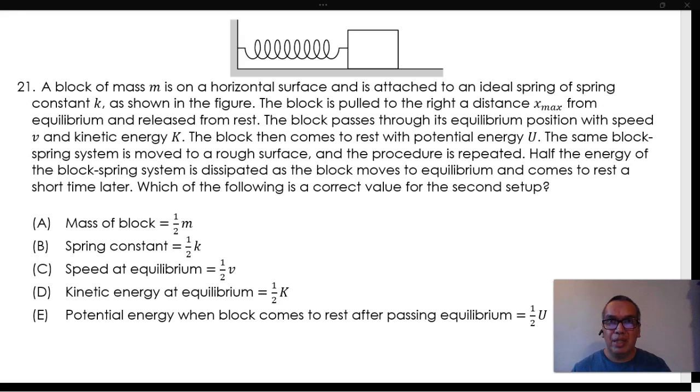A block of mass M is on a horizontal surface and is attached to an ideal spring of spring constant K, as shown in the video. The block is pulled to the right at distance X max from equilibrium and released from rest.